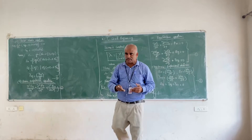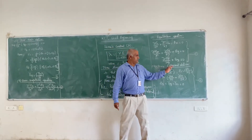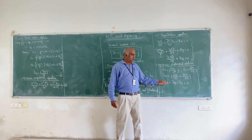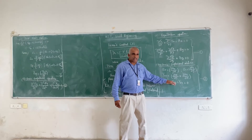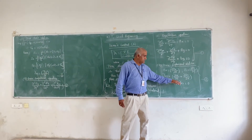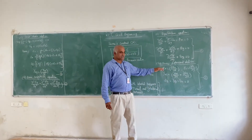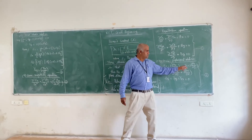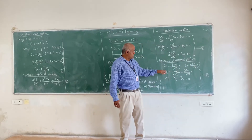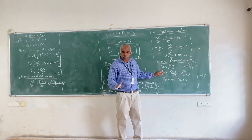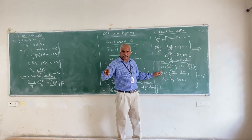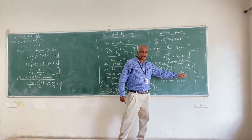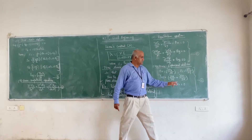Equation number 2 is the strain-displacement relations. The displacements are u_x, u_y, u_z. Since epsilon_z = 0 and shear strains gamma_yz and gamma_zx are also zero, the non-zero terms are: epsilon_x = ∂u_x/∂x, epsilon_y = ∂u_y/∂y, and gamma_xy = (∂u_x/∂y) + (∂u_y/∂x). This is equation number 2 — the strain and displacement relations.